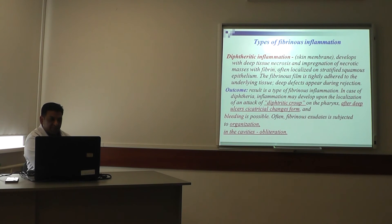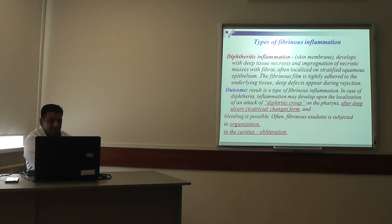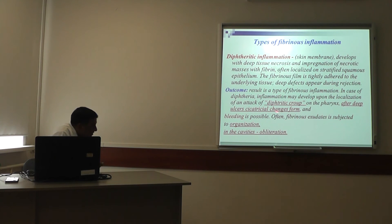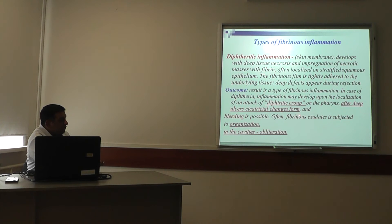Diphtheritic fibrinous inflammation: this develops with deep tissue necrosis and impregnation of the necrotic mass with fibrin, often localized on stratified squamous epithelium. The fibrinous film is tightly adhered to the underlying tissue, and deep defects appear during rejection. Outcome: in diphtheria, when localized on the pharynx, deep ulcers and cicatrix changes form and bleeding is possible. Often in fibrinous inflammation, the exudate is subjected to organization, leading to cavity obliteration.